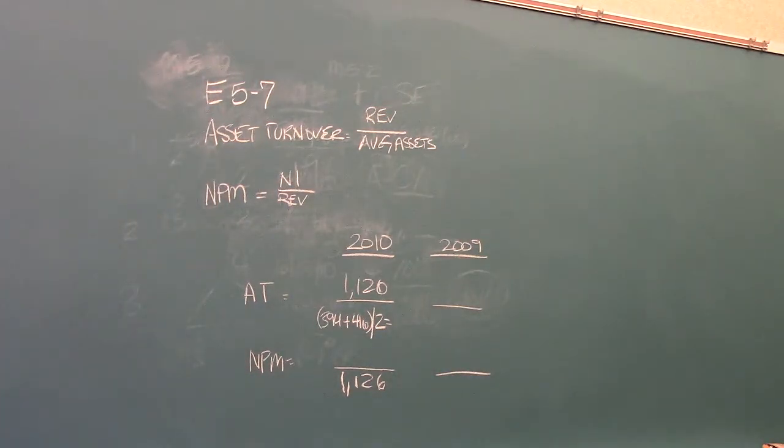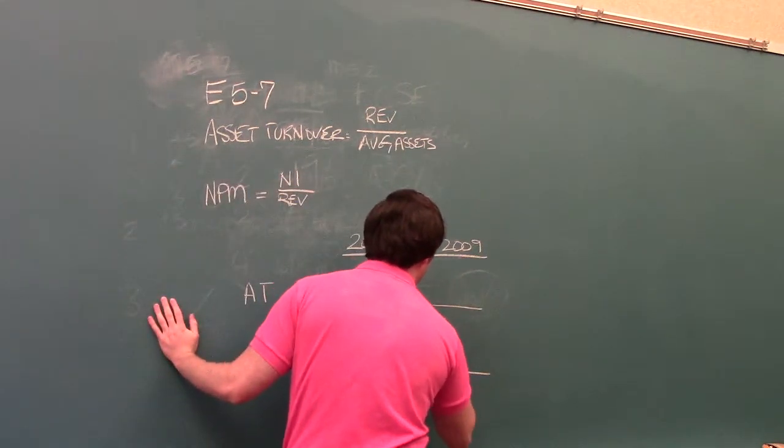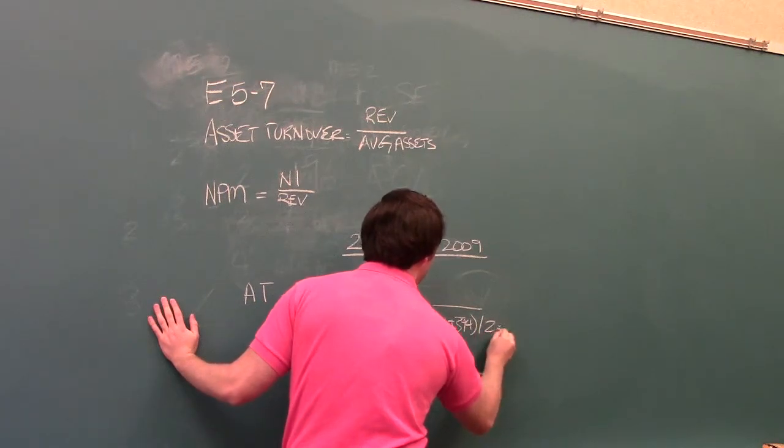For 2009, I'll go ahead and plug that in too, it's 386 and 394, and we'll divide it by 2 again.